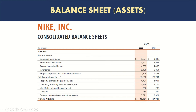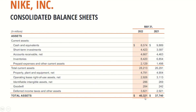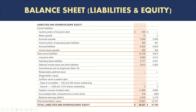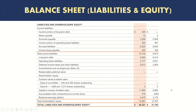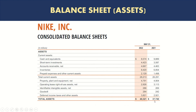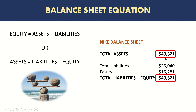Looking at the balance sheet of Nike, on the asset side the total assets are 40.3 billion. On the other side — liabilities and equity — all those lines are liabilities, and then you see shareholders' equity, which also includes retained earnings. The total of liabilities and equity is also 40.3 billion. In the prior year, both total assets and total liabilities plus equity were 37.7 billion. So the equation always balances — assets will always equal liabilities plus equity.